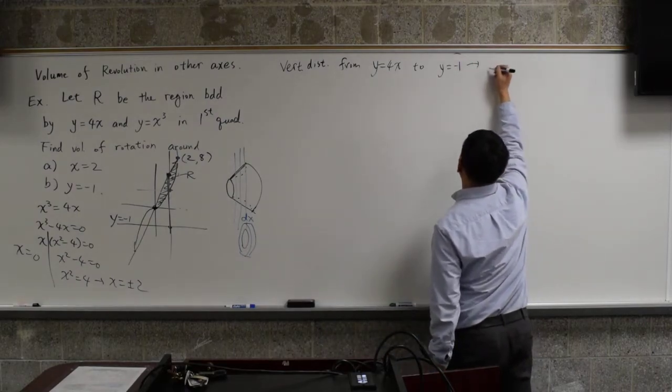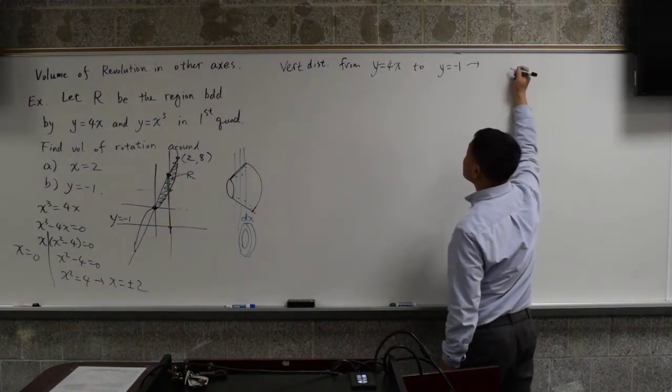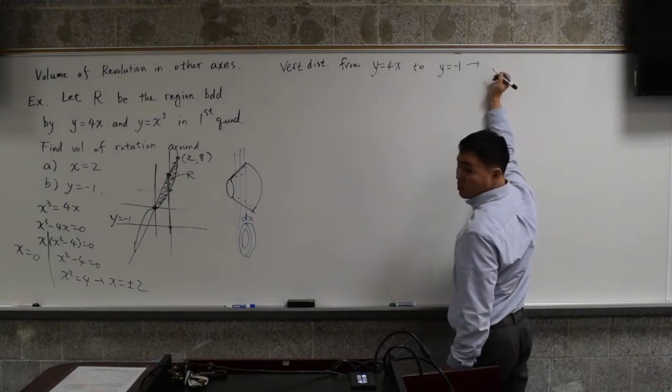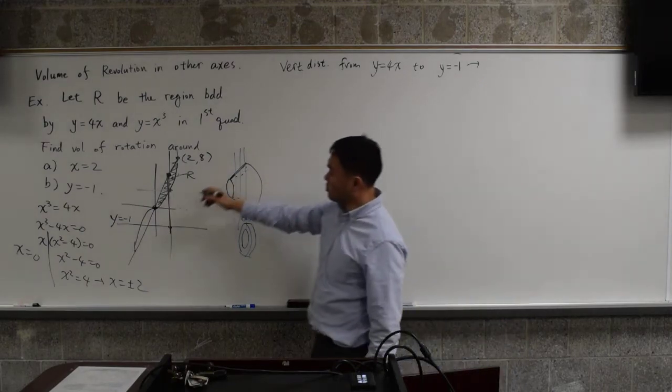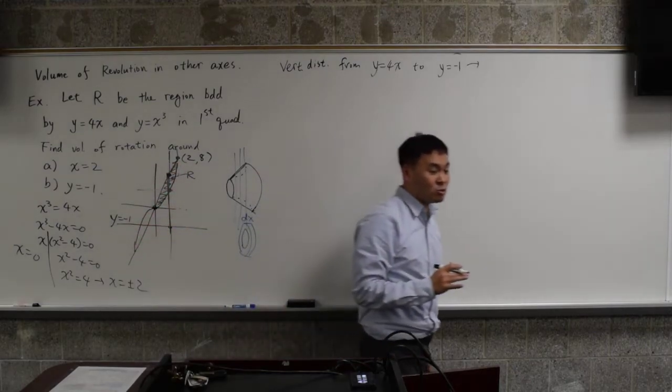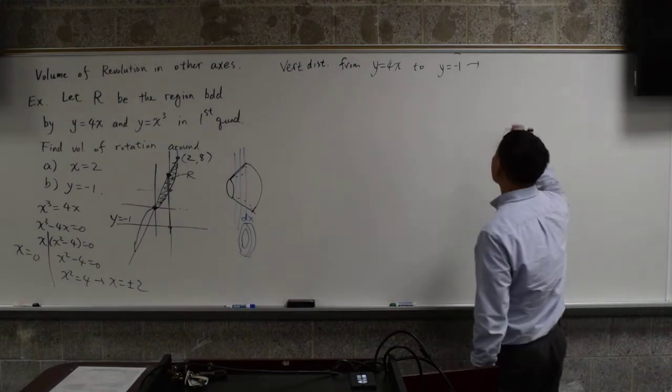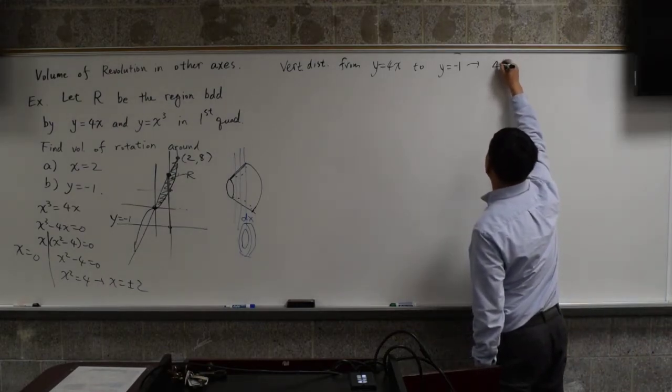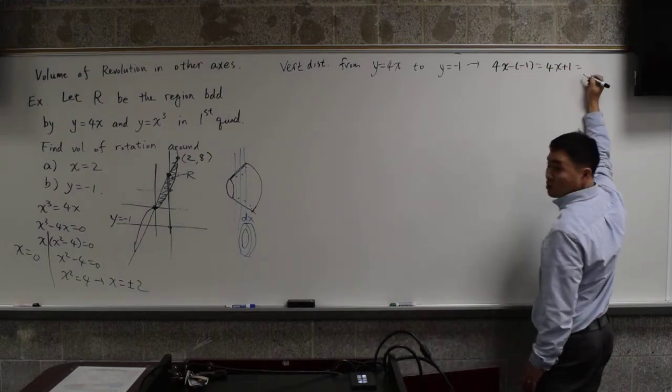In which case, what do you get? How do you get the distance? Should I do 4x minus negative 1 or negative 1 minus 4x? 4x minus negative 1, because as you can see, 4x is above negative 1. You should absolutely use the graph to determine which should be subtracted from which. So you know that you need to do 4x minus negative 1, which gives you 4x plus 1, and that's equal to... Little r? No. Big r? Big r.